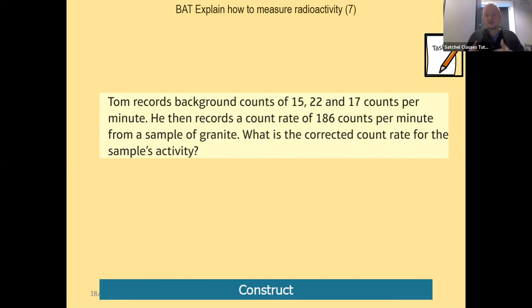That would mean that from that 186 counts we would take away the background count to get the corrected count. But the problem here is that they've given us three background counts. So which one do we choose? 15, 22, or 17? Well, in science, when we've got a range of numbers that are measuring one thing, we use the mean.